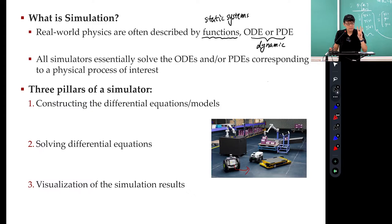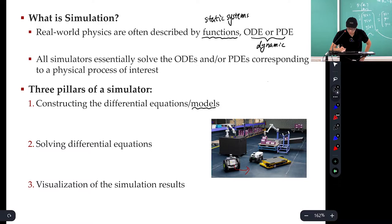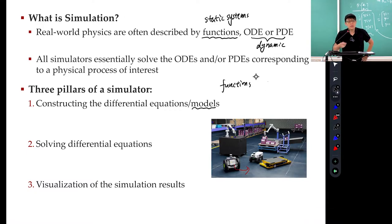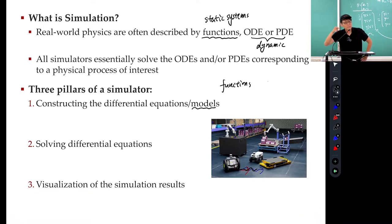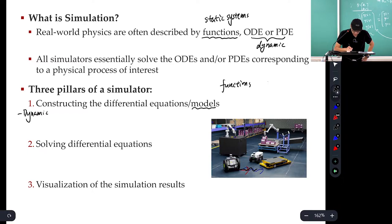In order to do simulation, you need three things. You should tell the system what the differential equation is before you can solve it — you need to construct the differential equations or the system models. For example, a robot moving around can be described using x-dot differential equations to describe its motion. That's the dynamic model — ODE or PDE. We don't deal with PDE that much; it's hard to simulate.